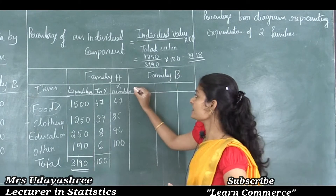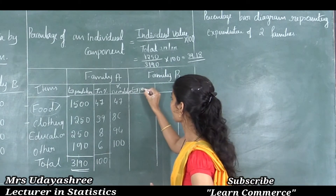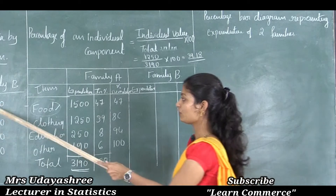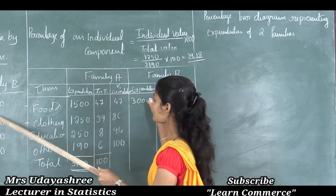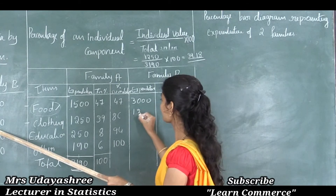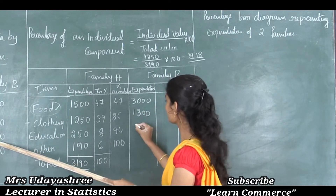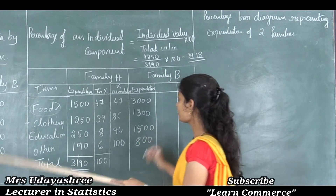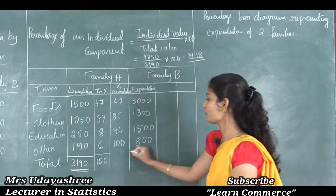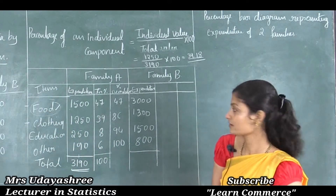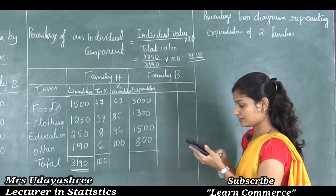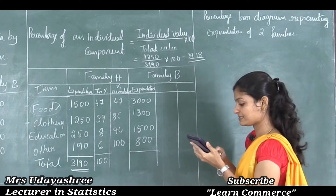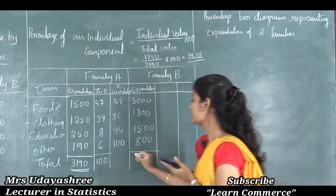Next let us look at family B expenditure. For family B: food 3000, clothing 1300, education 1500, and others 800. First we need to calculate the total: 3000 + 1300 + 1500 + 800 = 6600. So the total for family B is 6600.